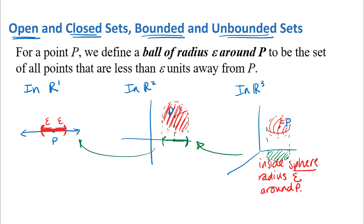The idea that these higher-dimensional representations can be reduced down into lower-dimensional ideas will be important as we continue this semester. So a ball of radius epsilon — sometimes we call this an epsilon neighborhood — is basically just a region around a point P consisting of all points less than epsilon units away from P.